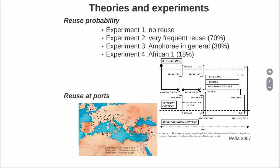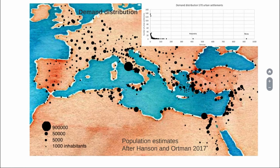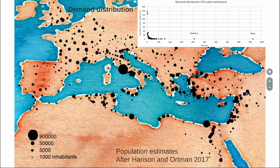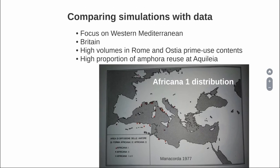The second set of experiments focuses on reuse at ports. It is not crazy to assume that reuse might happen with a higher probability at port sites because amphorae were mainly meant for maritime transport. So I explore conditions in which there's 0% reuse at ports, 50%, and 100%. I also need to implement a basic macroeconomic model of how the Roman economy functions — some production in North Africa, focusing on the case of African olive oil, and a distribution of demand for all settlements in the Orbis network. The proxy evidence I use for demand is just population estimates derived from the work of Jack Hanson, using a correlation of population with demand.